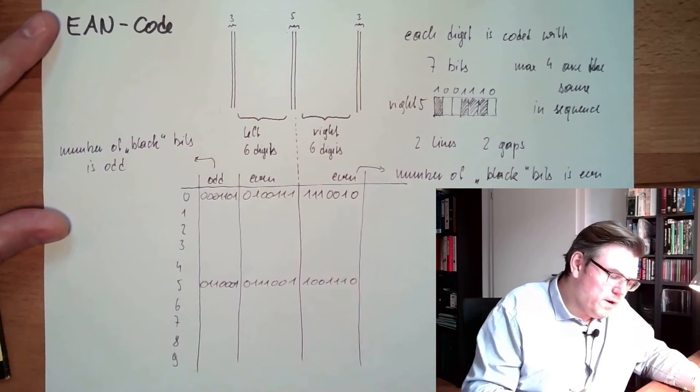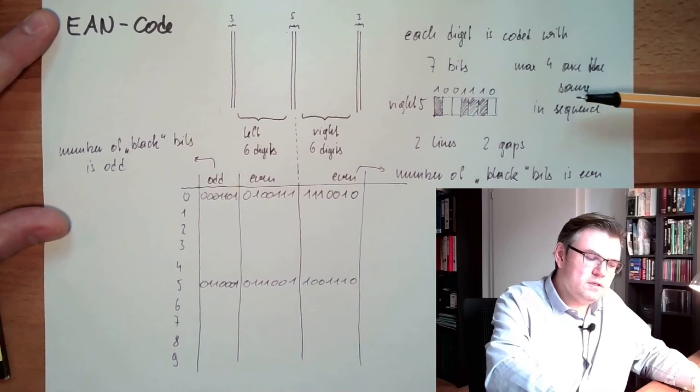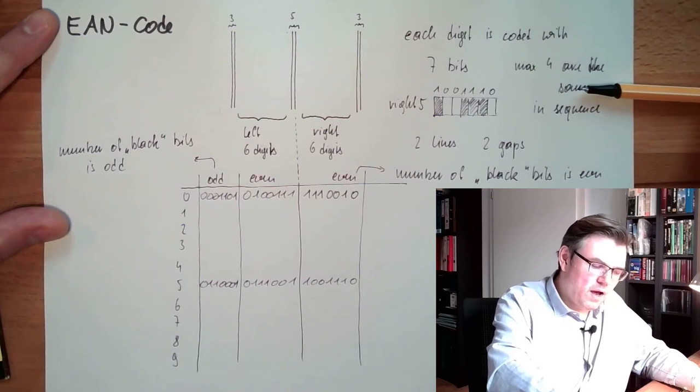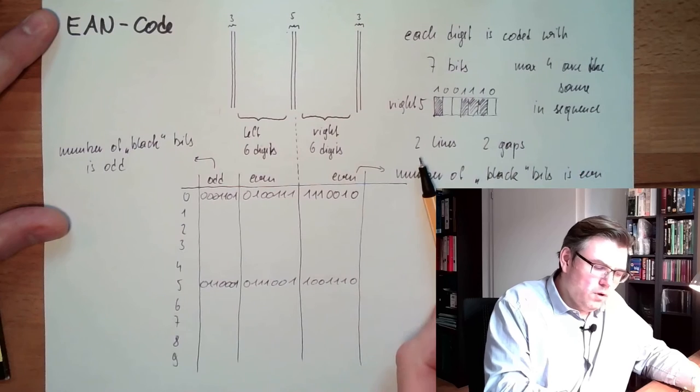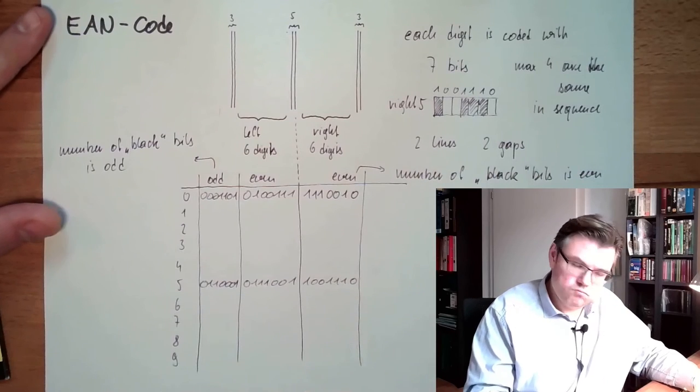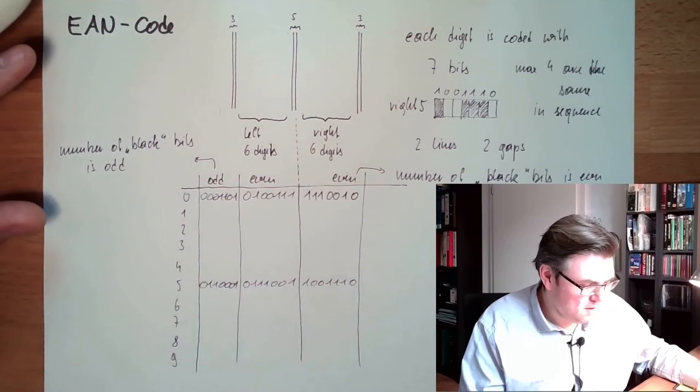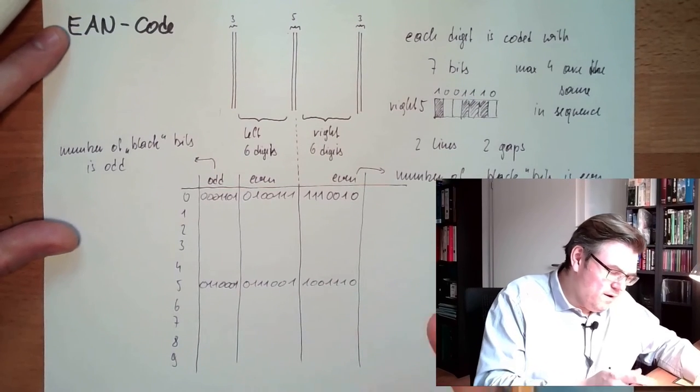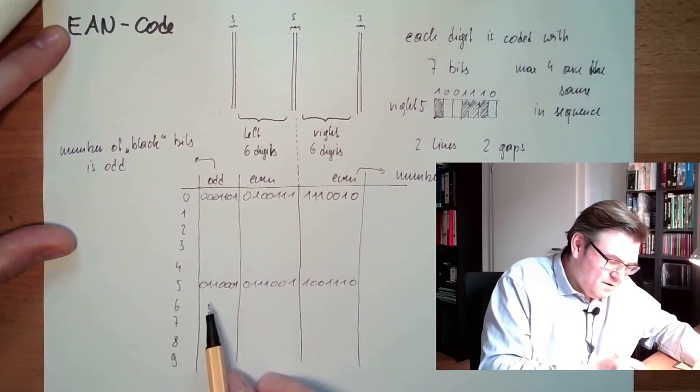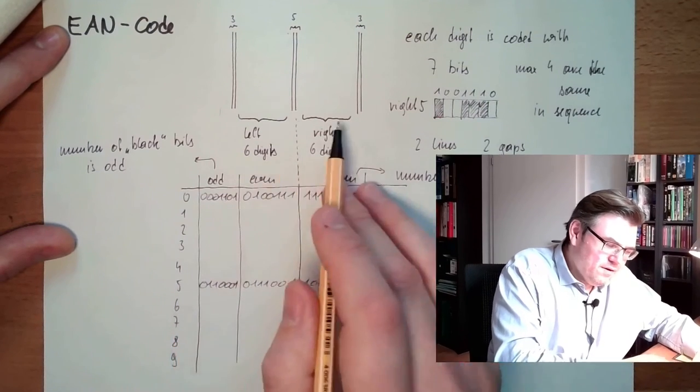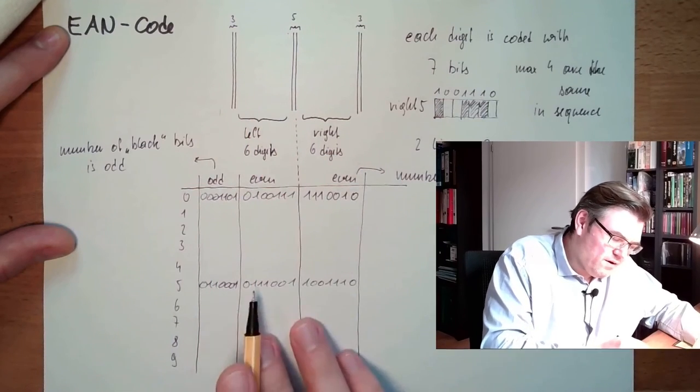And there are different combinations, simply. Following these rules, maximum five are the same in sequence. So, maximum four gaps or four lines, four ones or zeros. And two lines and two gaps. There are different combinations then. Why is that so complicated? I mean, there are different codes for the same letter, depending on the position. And even if I have the same area, the left hand area, there are two codes.